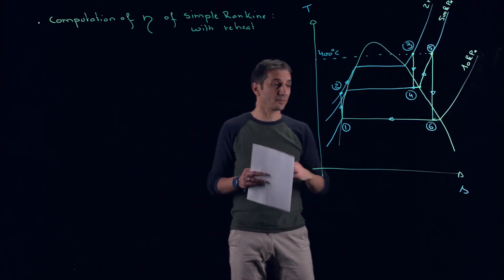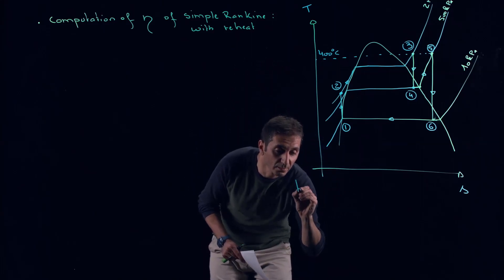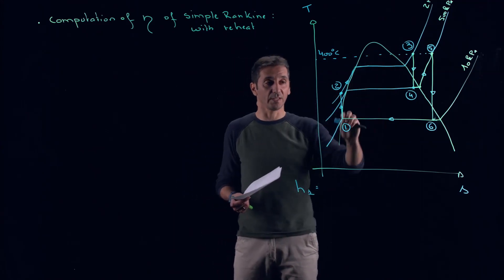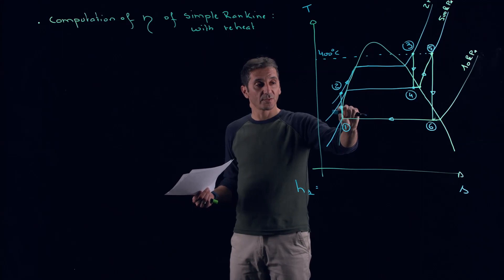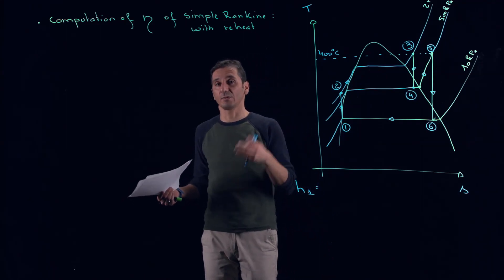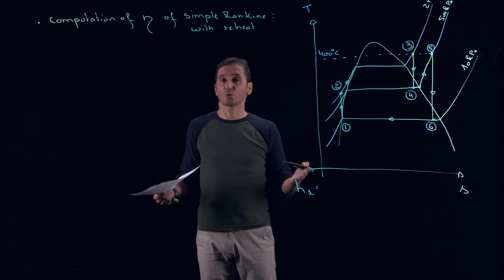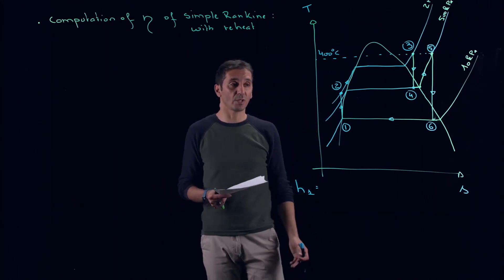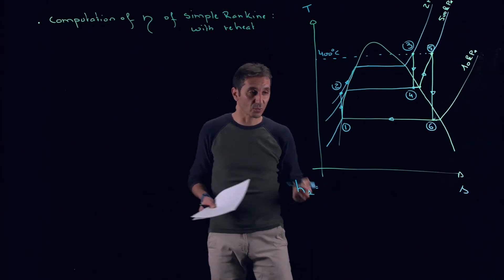We will need different enthalpies. Starting with H1: we will neglect the work of the pump compared to the work of the turbines. If you plot a real TS diagram, the difference is pretty small — quite realistic. We know the pump work equals minus the integral of V dP, and reaching 2 MPa gives roughly minus 2 kJ/kg, which is very small compared to the turbine work. So we neglect it.